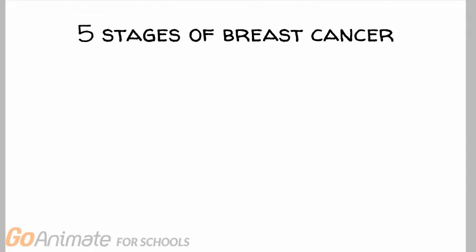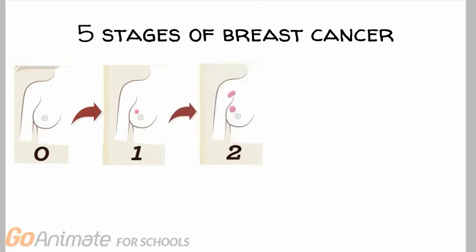There are five stages of breast cancer. In stage 0, the tumor has developed in the milk duct or lobule. In stage 1, the tumor has developed to less than 2 cm across, but has not spread beyond the breast. In stage 2, the tumor is at least three-quarters of an inch, and can remain in the breast tissue or spread to a few lymph nodes.